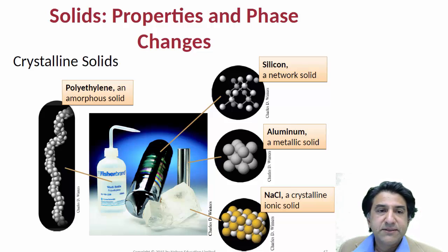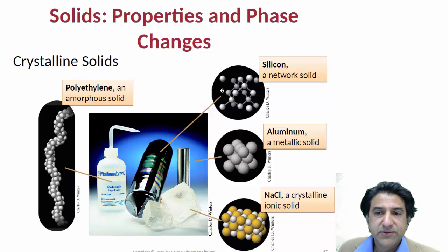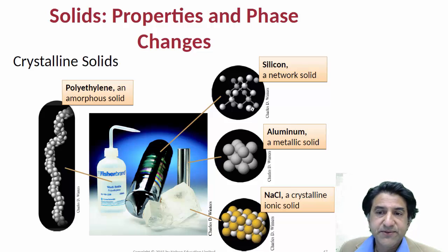Solids come in many different types. Here's a picture indicating the different types that we can have. This is a cylinder of purified silicon. Silicon has a structure very much like carbon — it's a tetrahedral network solid, which is shown over here, and it forms a crystal. Crystals are regular arrangements of atoms in space, and they have particular properties.